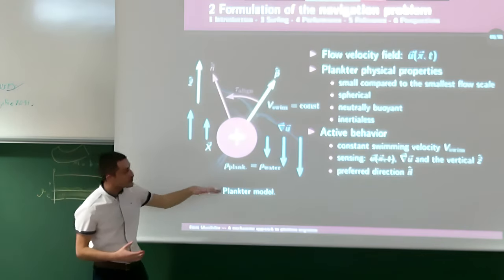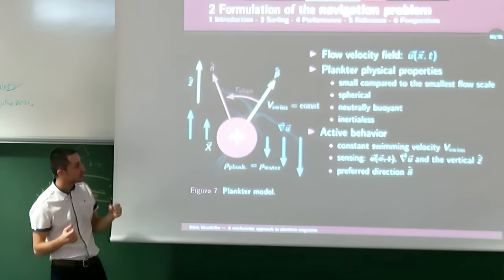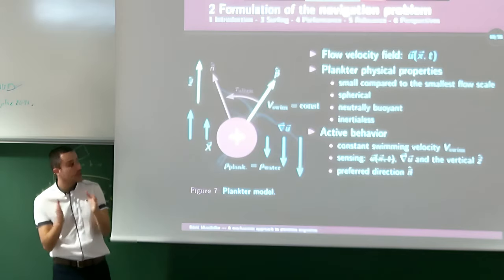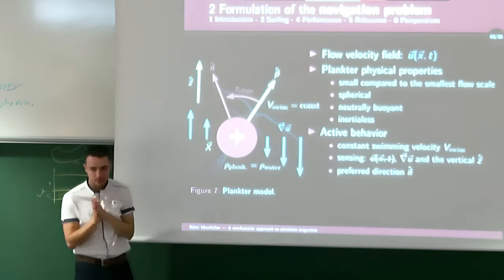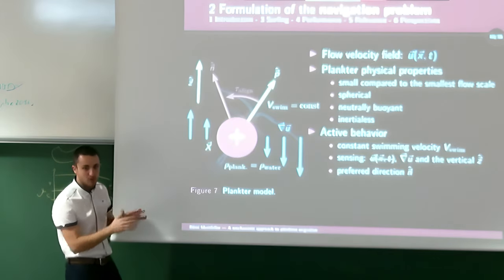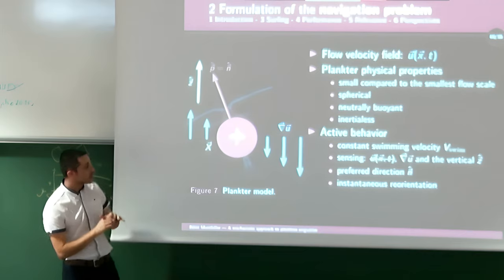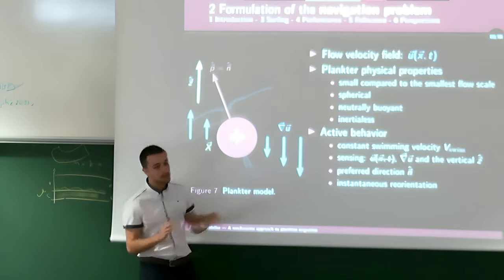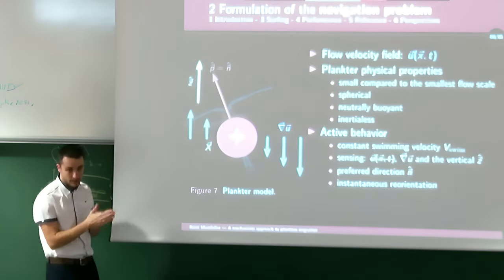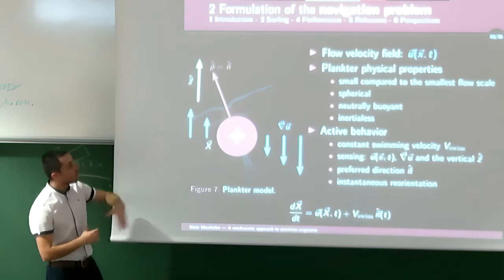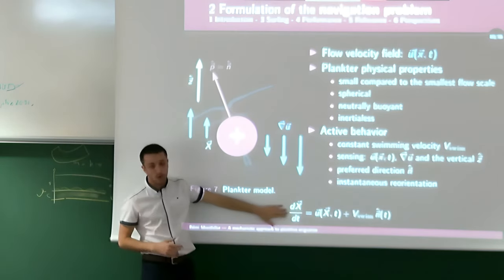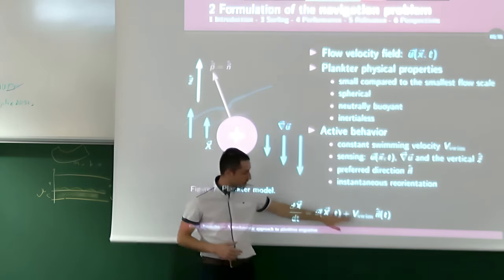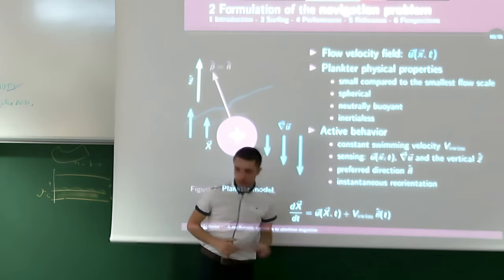Because organisms are carried by the flow, they cannot directly measure the flow velocity — only flow velocity differences, i.e., the gradient of flow velocity. They react to local flow sensing by choosing a preferred swimming direction n. In practice, it takes time to go from actual swimming direction p to preferred direction n, but for now we assume instantaneous rotation. Under these assumptions, the equation of motion is a simple advection equation with an active term: swimming velocity times preferred swimming direction.